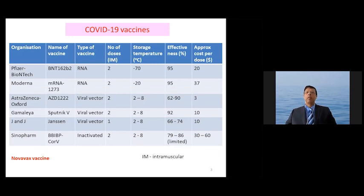This slide shows the different characteristics of the vaccines that have been approved and that are to be approved shortly. Looking at the Sinopharm vaccine, I'll be discussing the BBIBP formulation. It's an inactivated vaccine, two doses are needed, and the efficacy has been reported — from a limited amount of data that has been released, which is very important to remember — at 79 to 86%.